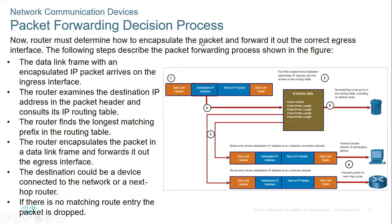Packet forwarding decision process: the router decides where to forward packets. The data link frame with an encapsulated IP packet arrives on the ingress interface. The router examines the destination IP address in the packet header, then consults the routing table. In the routing table, we have different routes, and the router finds the longest match prefix.